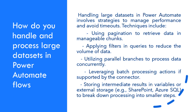How do you handle and process large data sets in Power Automate flows? Handling large data sets in Power Automate involves strategies to manage performance and avoid timeouts. Techniques include: using pagination to retrieve data in manageable chunks; applying filters in queries to reduce the volume of data; utilizing parallel branches to process data concurrently; leveraging batch processing actions if supported by the connector; and storing intermediate results in variables or external storage (e.g., SharePoint, Azure SQL) to break down processing into smaller steps.